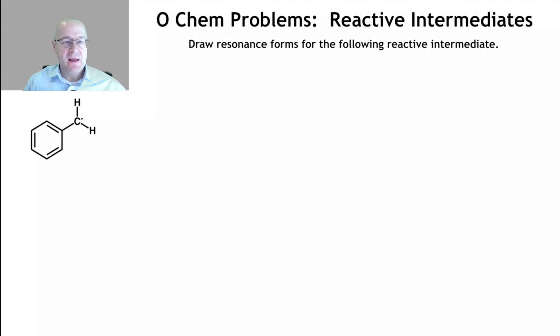This is a benzylic free radical. So we've done resonance forms in the past with carbocations and carbanions. We've even done them on the benzylic ones. We just didn't say what they were. We just did resonance. Now we're going to start doing resonance of free radicals.